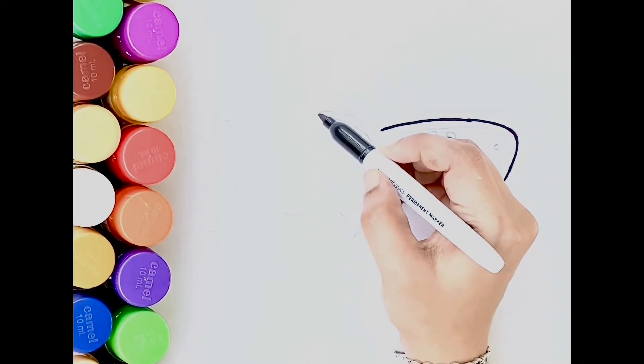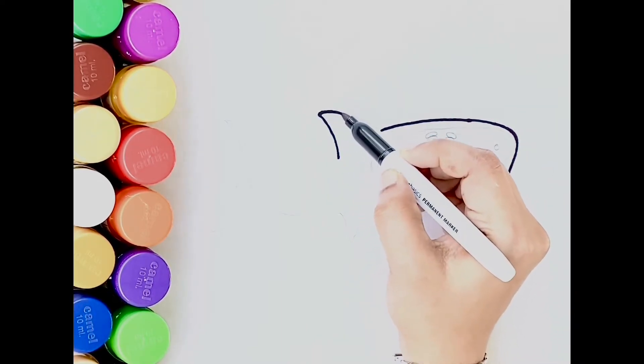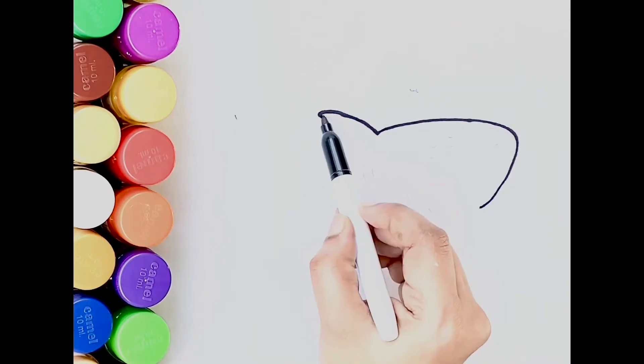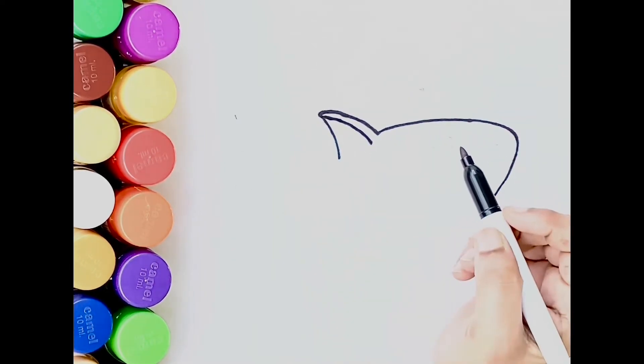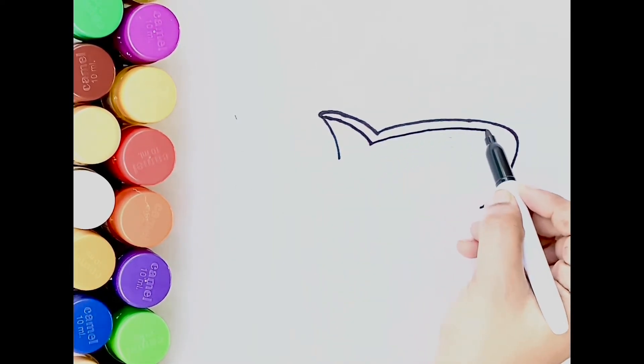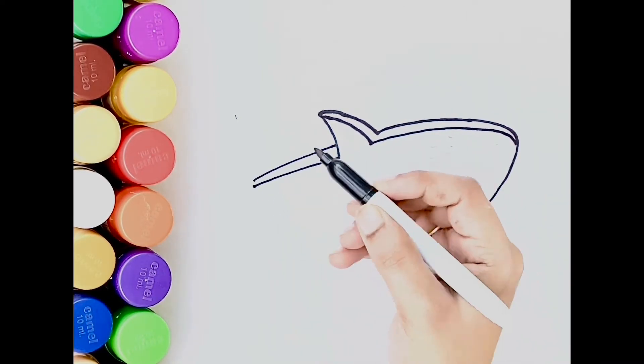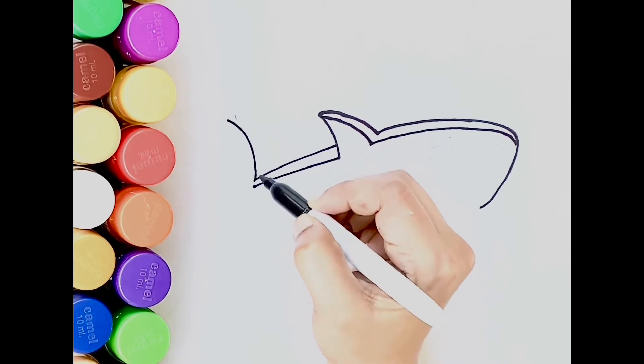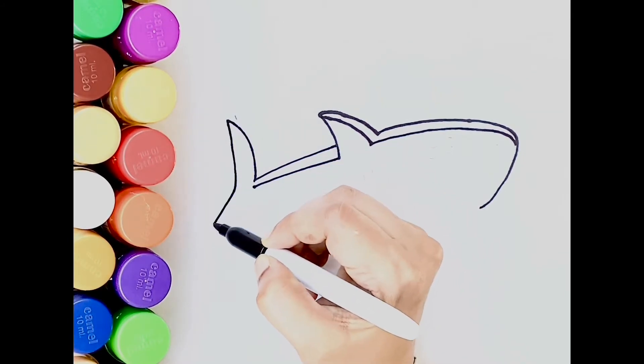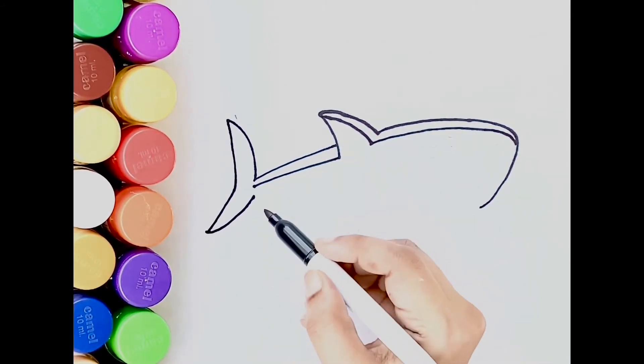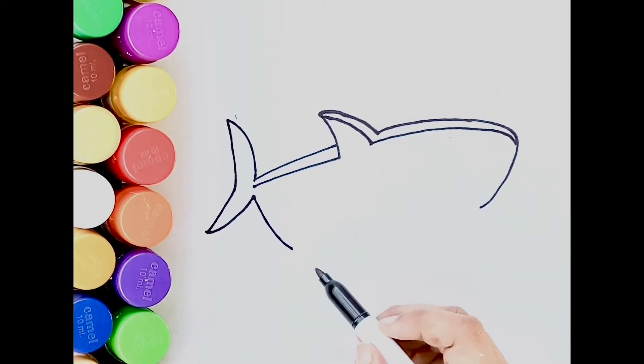Then draw an upside down V. Now draw a slanted line and again draw a sharp edge upside down V and alphabet B for the tail. Then from the tail, draw a U-shape curve.